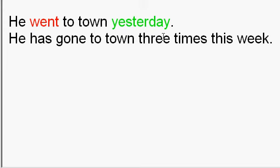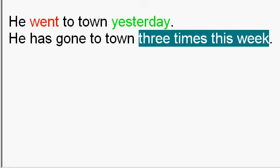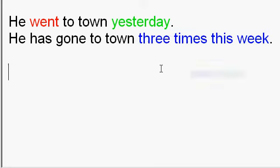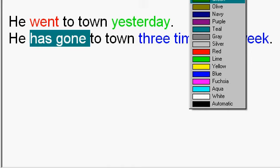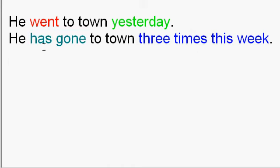If you have something that occurred a number of times repeatedly in the past — three times this week — then you want to use the present perfect, 'has gone.' He has gone to town three times this week.